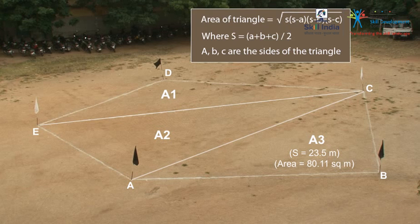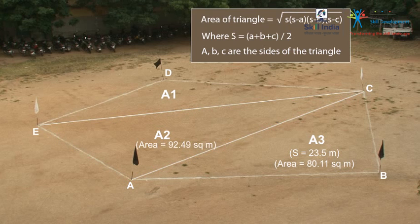Similarly, for triangle EAC, the area is 92.49 square meters. Finally, for triangle DEC, the area is 45.35 square meters.